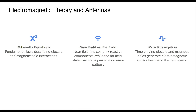Antenna theory is deeply rooted in electromagnetic theory, specifically Maxwell's equations, which describe how electric and magnetic fields interact. These equations show that changing electric fields produce magnetic fields, and vice versa, leading to the propagation of electromagnetic waves. The behavior of these waves varies depending upon the region. The near field is dominated by complex wave interactions, while the far field consists of stable electromagnetic waves that propagate through space. Understanding these principles is essential for designing efficient antennas for various applications.